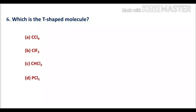Option A, CCl4, has four bond pairs and no lone pair with an SP3 hybridized central atom, so its shape is tetrahedral. Option B, ClF3, has three bond pairs and two lone pairs, so it is a T-shaped molecule — option B is the correct option. Option C, CHCl3, is also SP3 hybridized and tetrahedral. Option D, PCl5, is trigonal bipyramidal. So the correct option is B.